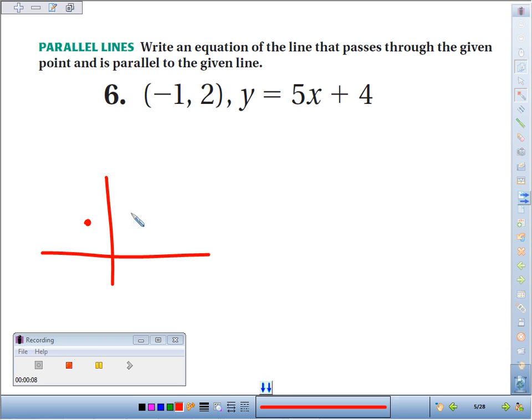Negative 1, 2 is right about here. 5x plus 4 might look something like this. It doesn't go through the point they gave us. What we're looking for is the dashed line. Same slope, it's parallel, but it goes through the red point. So the key is the same slope.